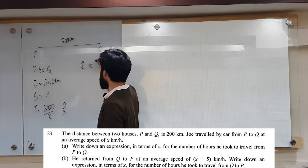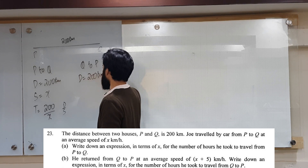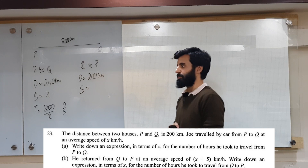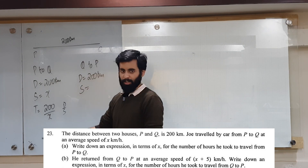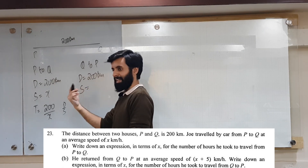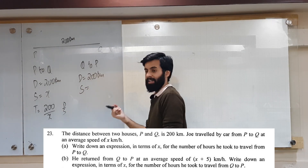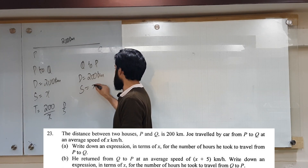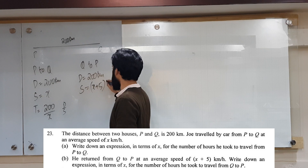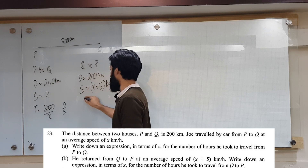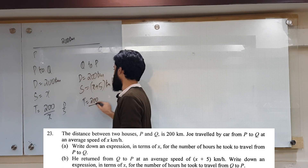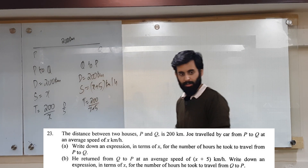When he's coming back, meaning he's traveling from Q to P, the distance will remain the same since he's taking the same route. The speed, however — the question says the average speed is x plus 5 kilometers per hour. The question could also say the speed is 5 kilometers per hour greater, so we do x plus 5. The time for the return is 200 over x plus 5.